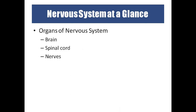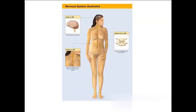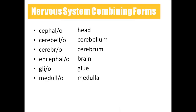The three important organs of the nervous system are the brain, spinal cord, and nerves. The brain and spinal cord come under the central nervous system, and the nerves come under the peripheral nervous system. Coming to the combining forms — the medical terminology related to the nervous system.